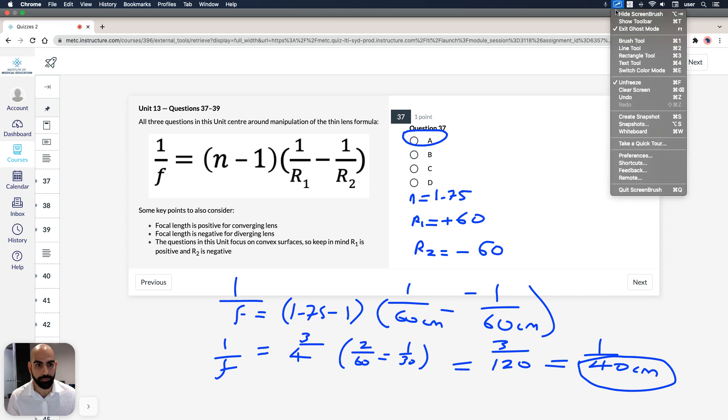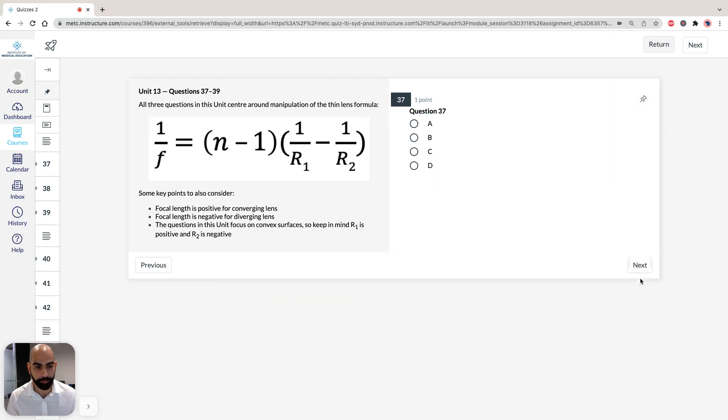So now if we can move to question 38, similar deal here. It says, consider a bi-convex lens for which the radius of curvature of one side is different to the other. So in the previous question, they were both 60 centimeters. But in this instance, one is going to be different to the other. So how about we just play around with the numbers? So what would be the effect of reversing this lens? So let's just do it.